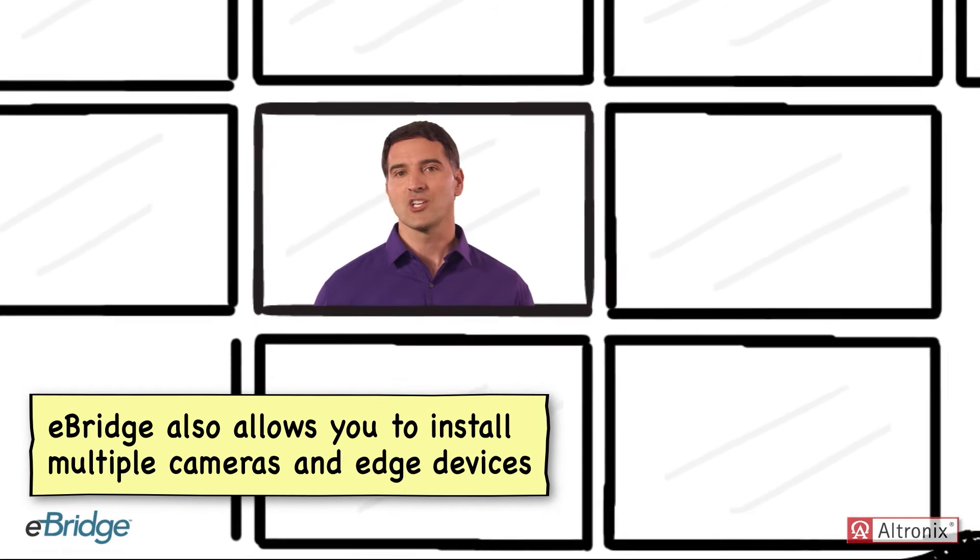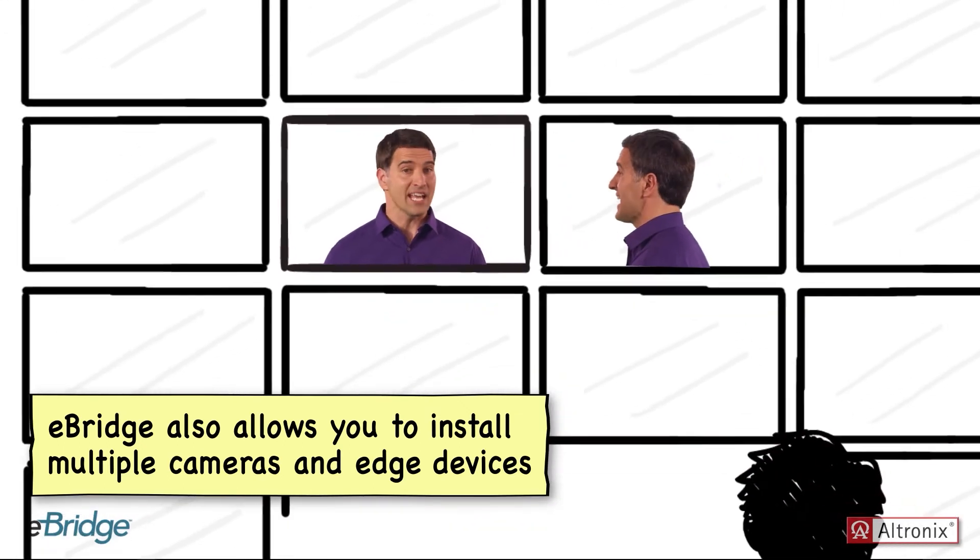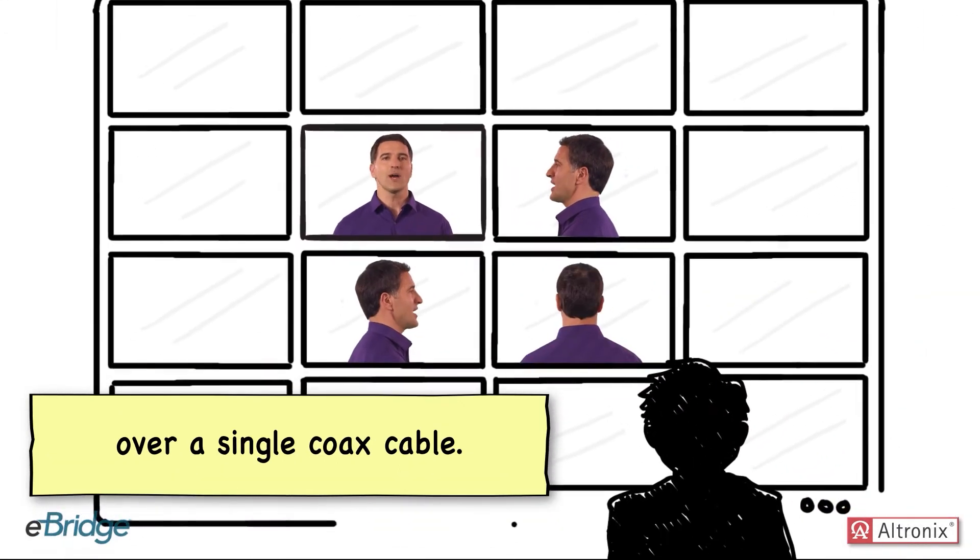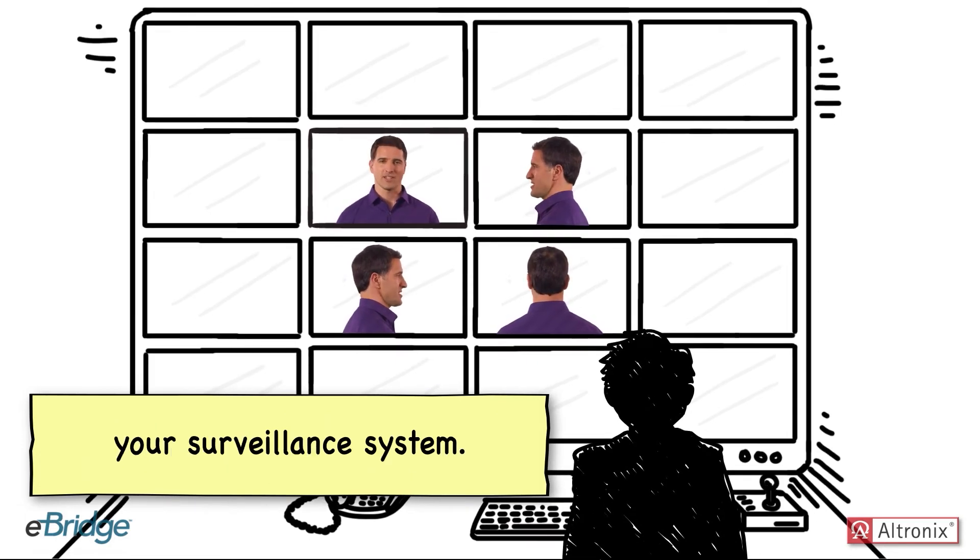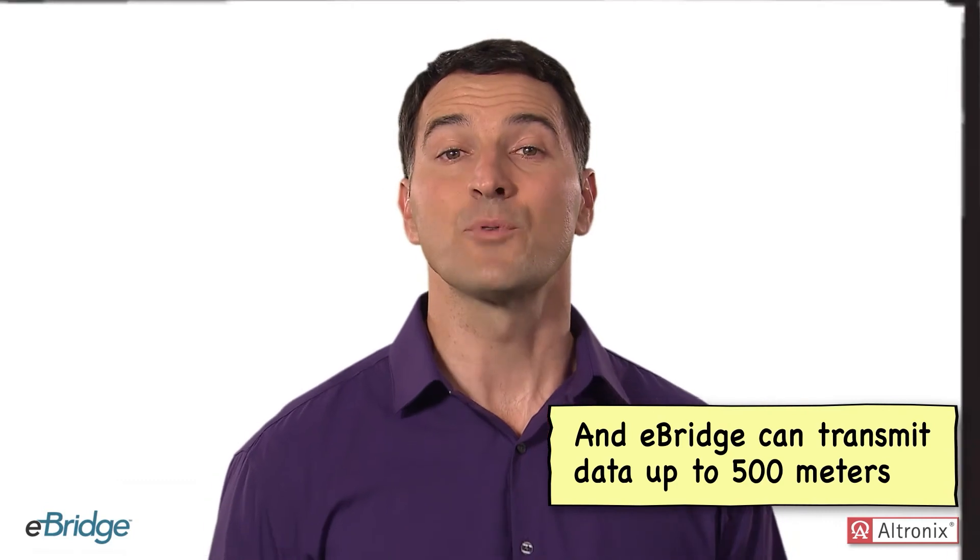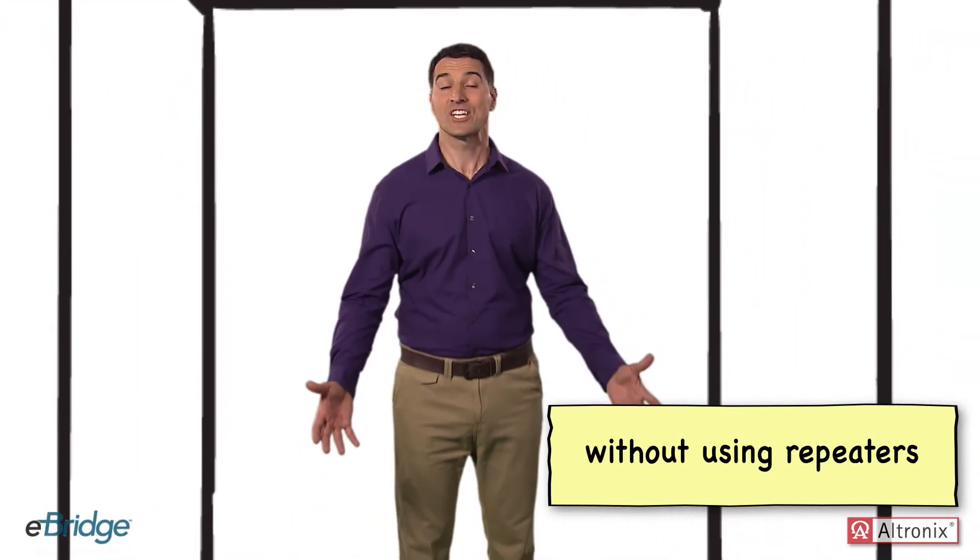eBridge also allows you to install multiple cameras and edge devices over a single coax cable. It's an extremely cost-efficient and simple way to expand your surveillance system.